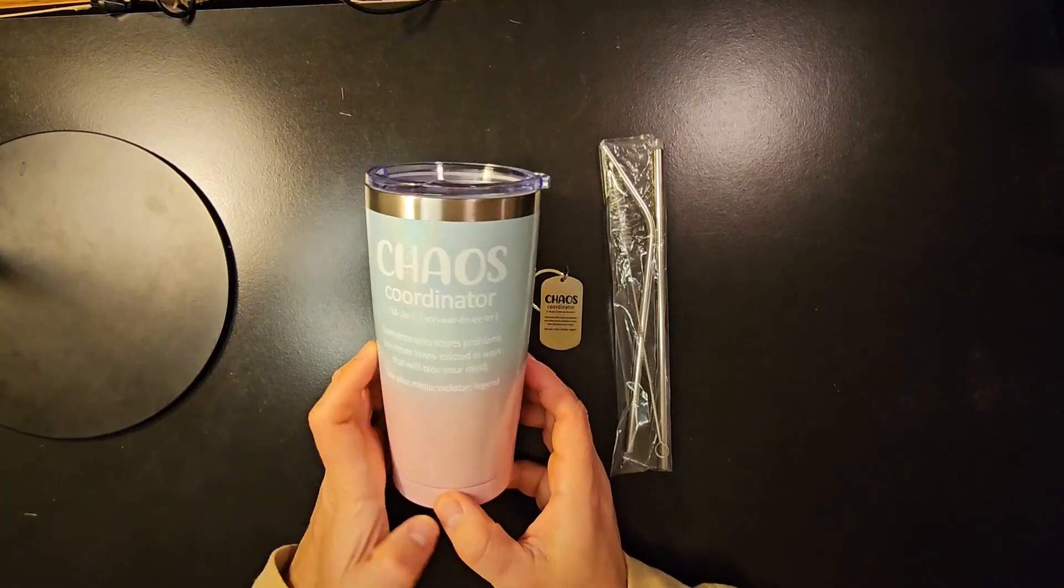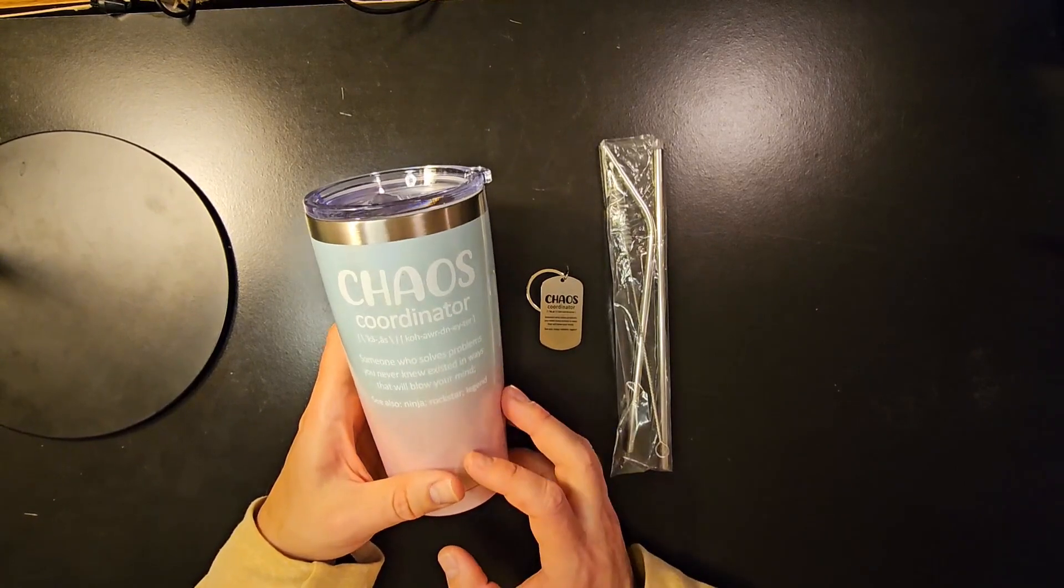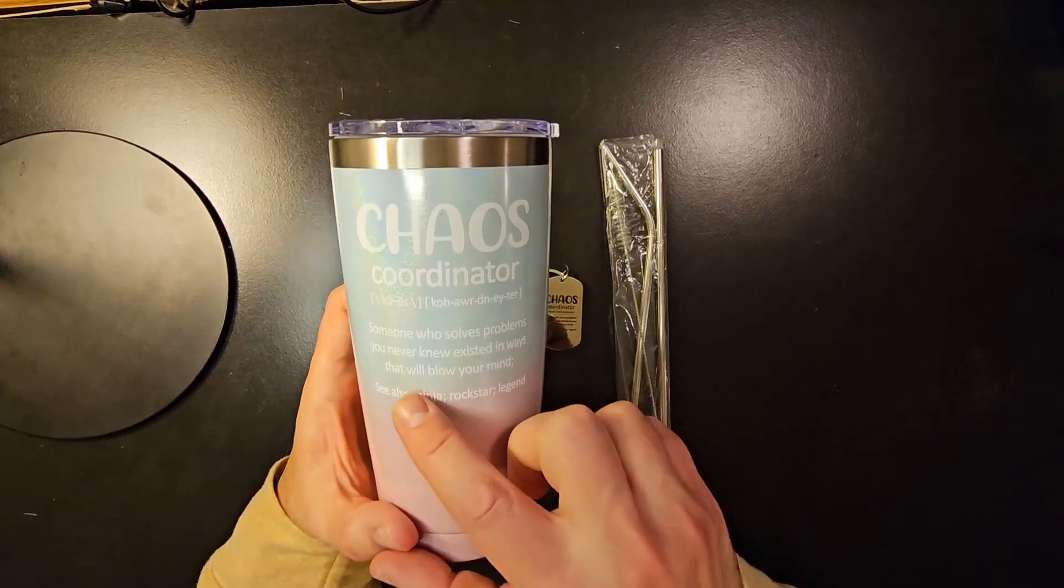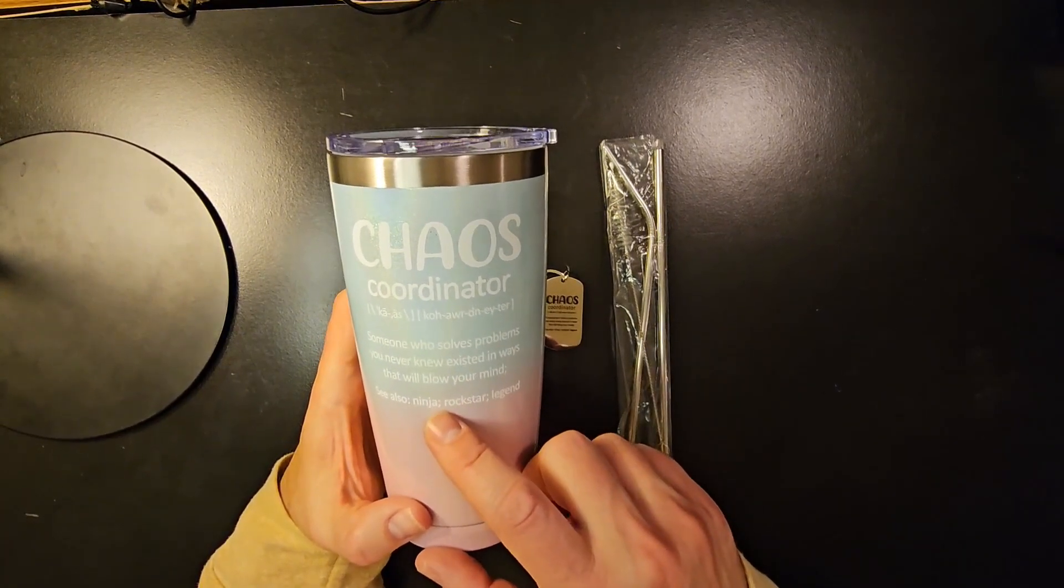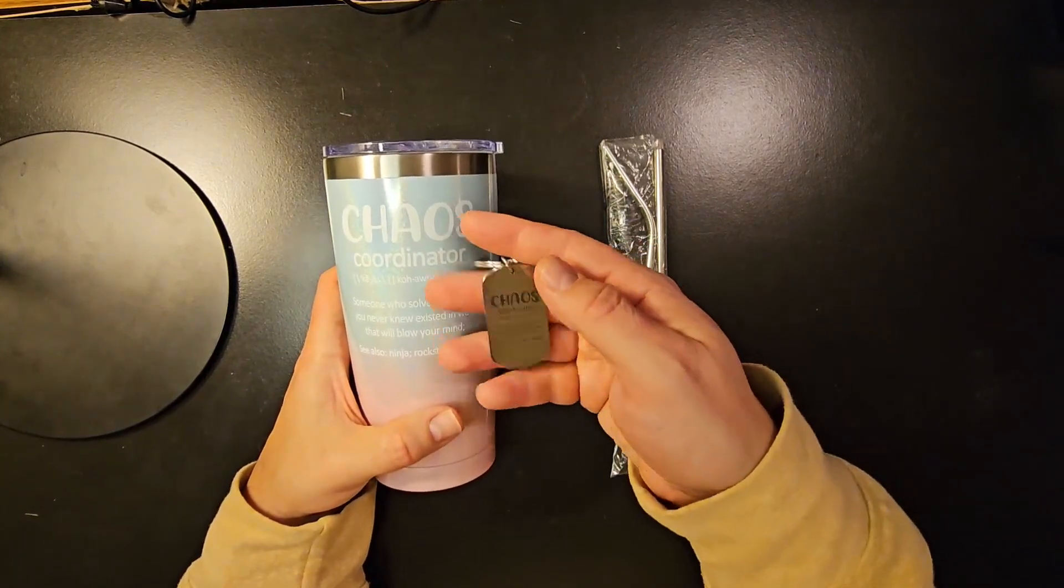Hey everybody, Scott here. Wanted to show you this tumbler cup, limited edition, that is 20 ounces. This is the one that says chaos coordinator and then has a saying on it. It says someone who solves problems you never knew existed in ways that will blow your mind. See also ninja, rockstar, and legend. Pretty cool.